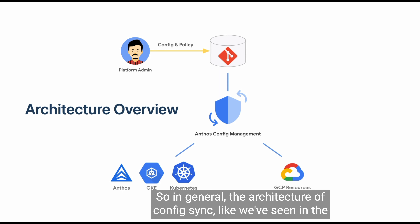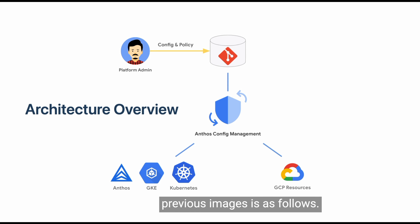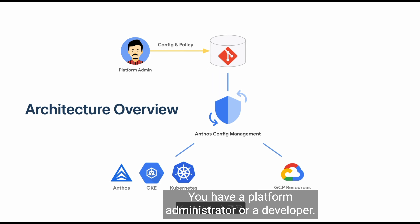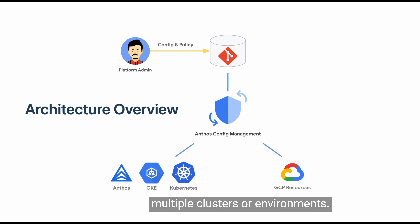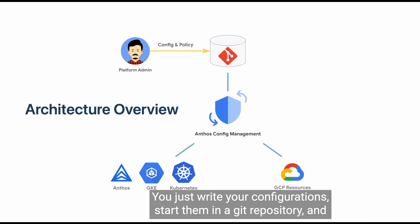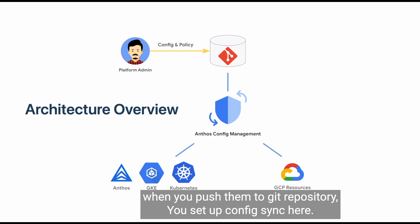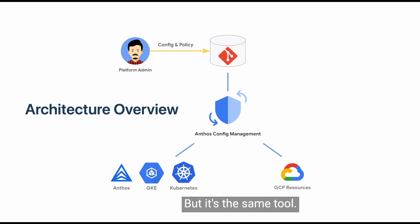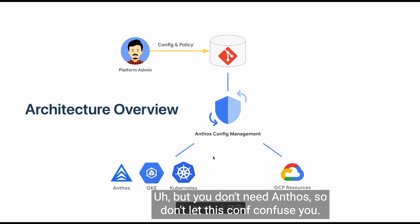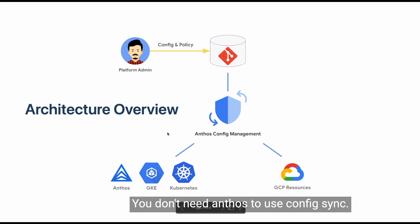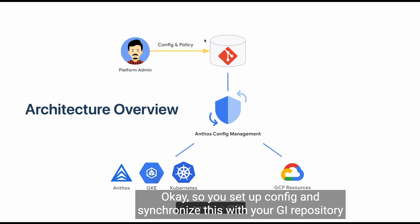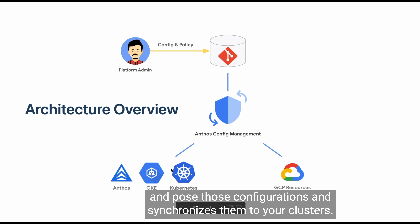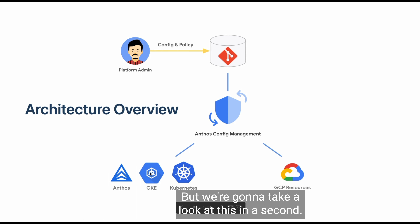The architecture of Config Sync works as follows. You have a platform administrator or developer who writes configurations and stores them in a Git repository. When you push to the Git repository, Config Sync — which is part of Anthos Config Management, though you don't need Anthos to use it — synchronizes with your Git repository, pulls those configurations, and synchronizes them to your clusters.